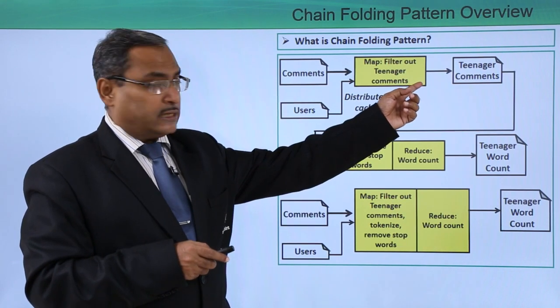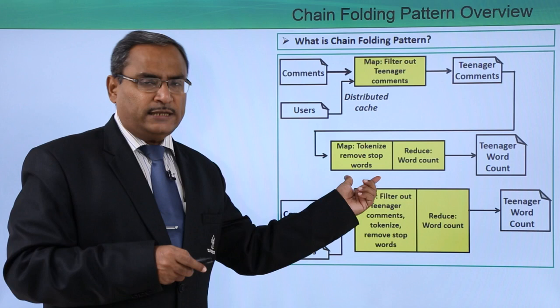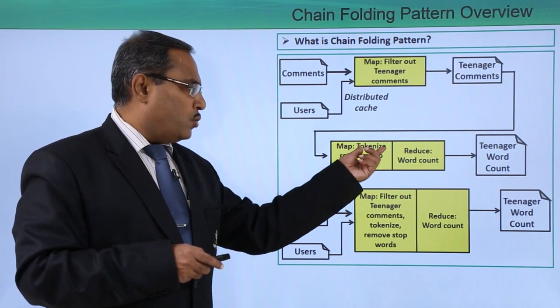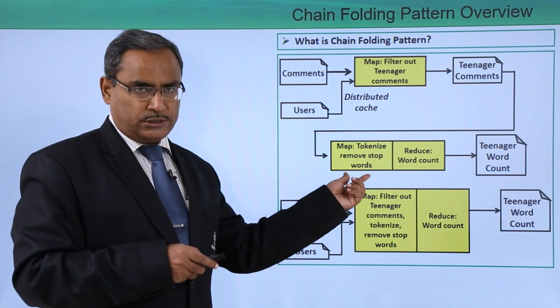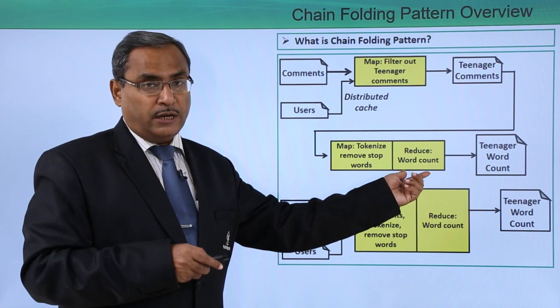Then the teenager comments will be the outcome and that will be taken as input for the next map reduce phase. Here in this map reduce task, we are doing tokenize remove stop keywords, and the reducer will perform the word count.